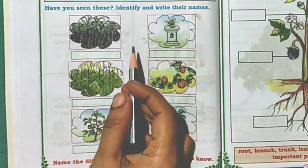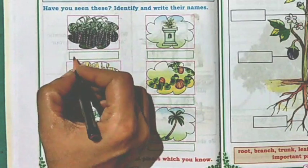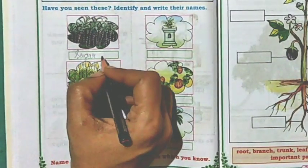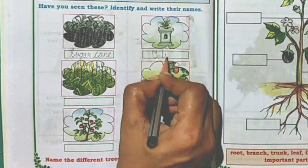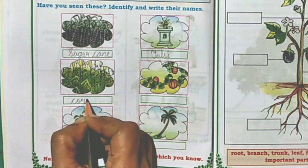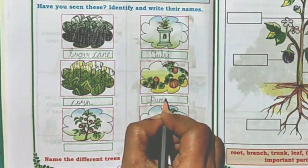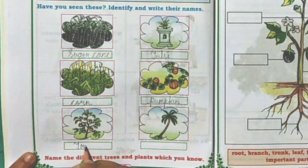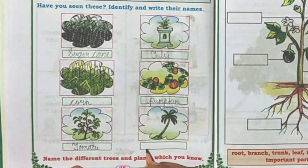Have you seen these? Identify and write their names. What is this? Yes, this is sugarcane. This is tulsi. This is corn. This is pumpkin. This is tomato. This is coconut tree.